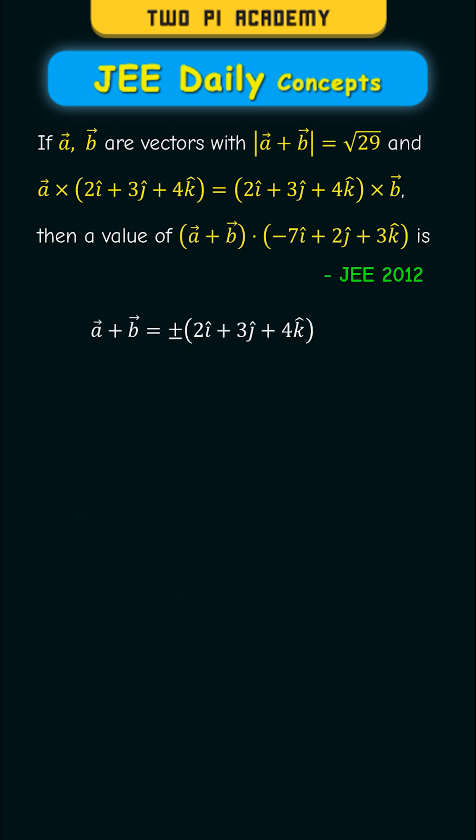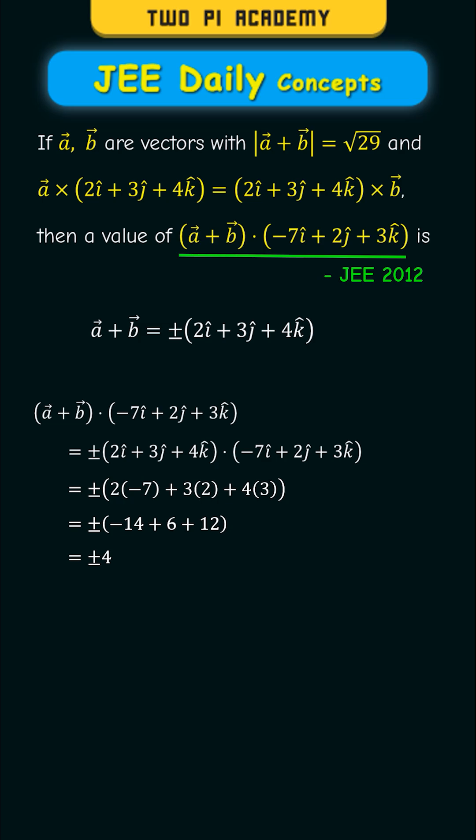So we got the value of vector A plus vector B. Now you just have to calculate the following dot product. We know that the dot product is the sum of the products of corresponding components. By simplifying this, we'll get the value of plus or minus 4 as our answer.